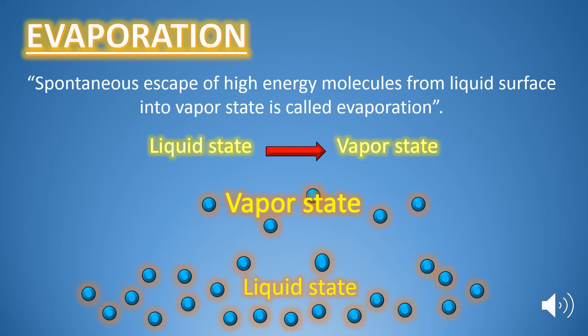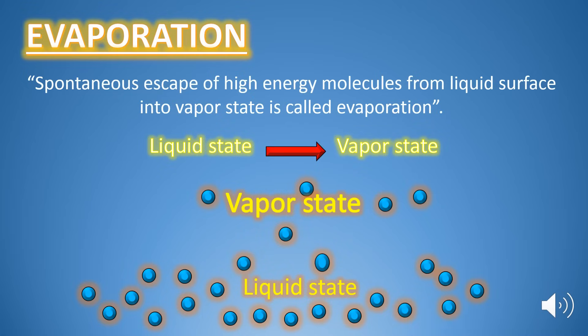Evaporation is a surface phenomenon and it takes place at all temperatures below the boiling point. All the molecules in the liquid do not possess equal energies at any temperature, so they move with different velocities. When the high energy molecules hit the molecules on the surface of the liquid, they give part of their energy to the surface molecules, which become able to overcome the force of attraction and thus leave the liquid surface. In this way evaporation takes place.